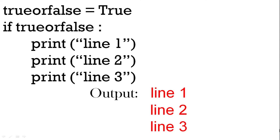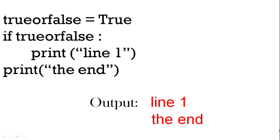We're now going to look at our example using blocks of code. Here we have if true or false — if it's true we can print line one, two, and three, so the output has line one, two, and three. You can see how all of the print statements have that space — that indentation — showing they're all part of the same block of code. Here's an example where we look at where there is that space and where there isn't: print line one inside the if statement prints line one.